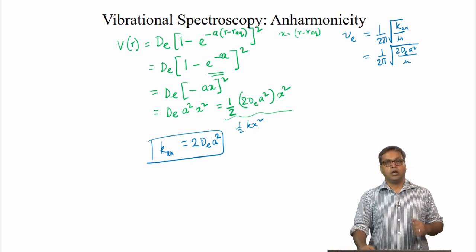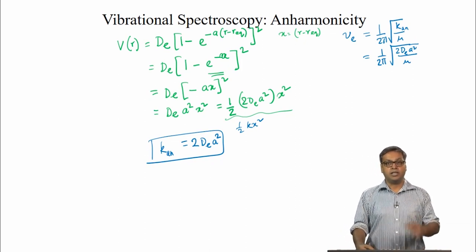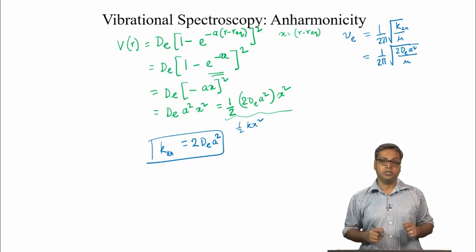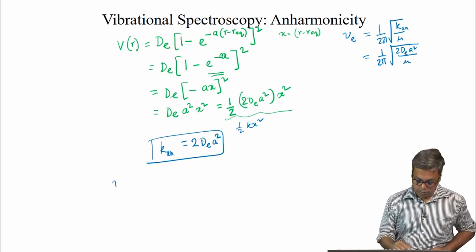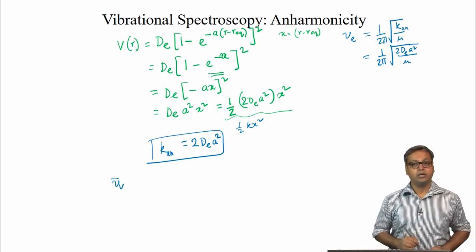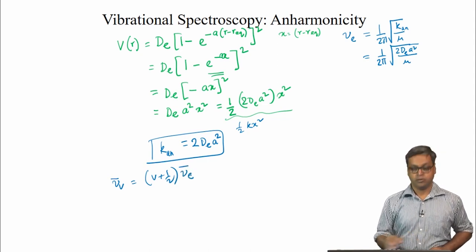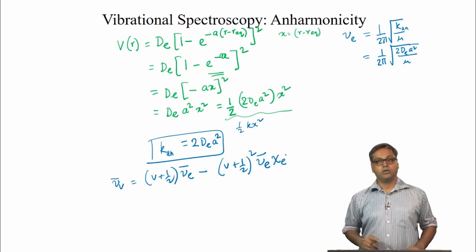If we substitute this into the vibrational frequency expression, going back to nu_e equals (1/2π) times the square root of k over mu, we can write nu_e equals (1/2π) times the square root of 2 D_E a squared divided by mu. So the question is: how has this changed the energy levels?